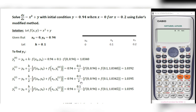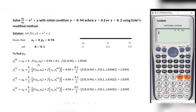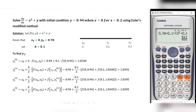Next, to find out y1, I will find out the solution correct up to 4 decimal places, so I am fixing the decimal places to 4 digits. First, type this formula in the calculator: y1(0) equals y0 plus h into f(x0, y0), which is 0.94 plus 0.1 into f(0, 0.94), that is 0 squared plus 0.94.